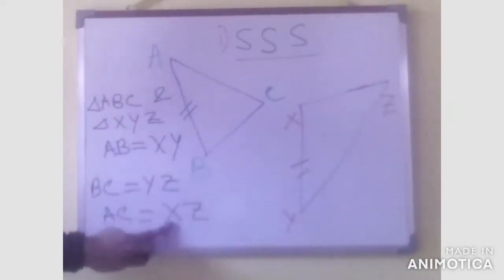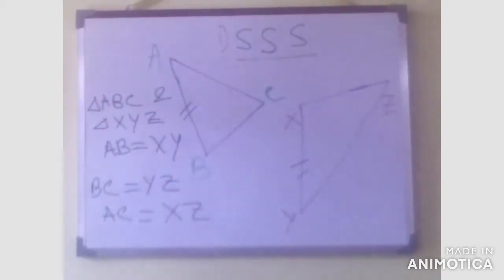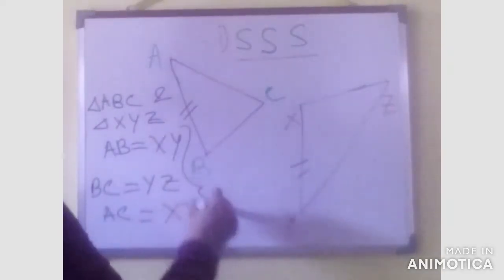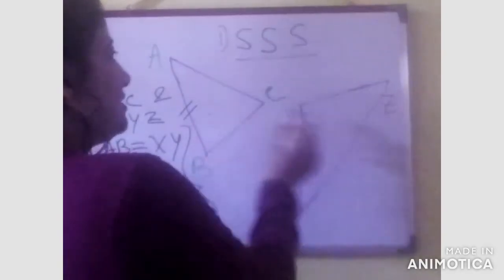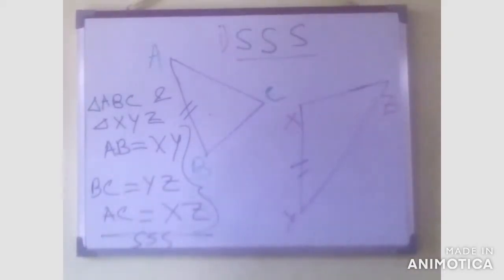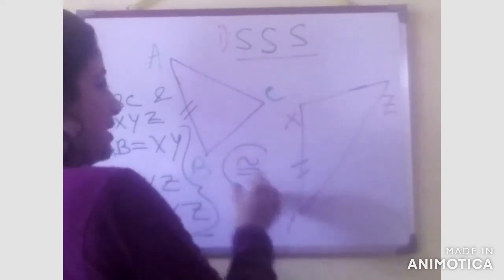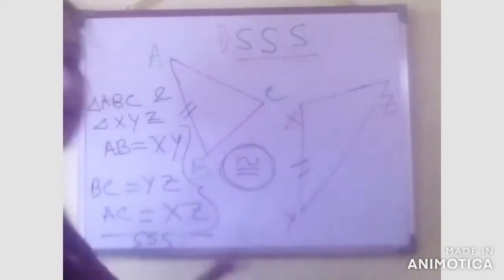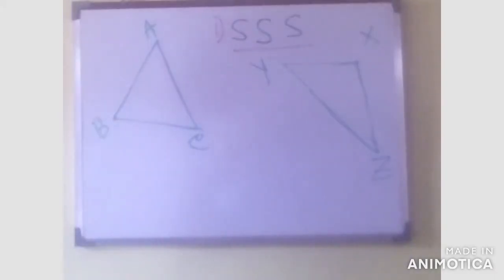So in this case, we can say that yes, it is satisfying the SSS condition — the side, side, side condition. That means these two triangles are congruent. Generally, we use the congruency sign — an equal sign with a curve — to write this. By the SSS condition, we have proved that triangle ABC is congruent to triangle XYZ.